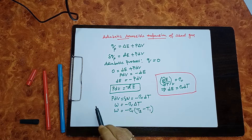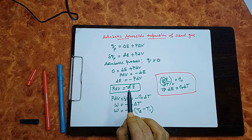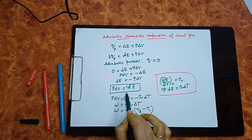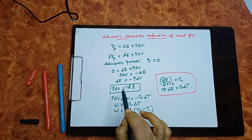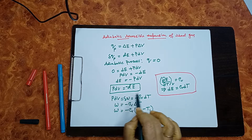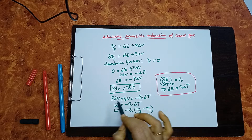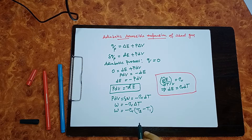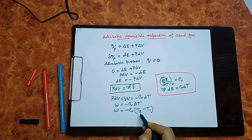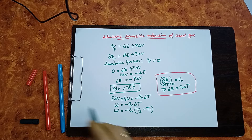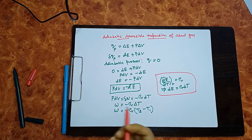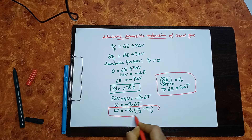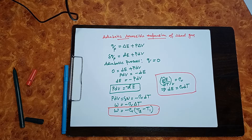So the total work W equals −C_V·dT integrated, which gives W = −C_V(T2 − T1). Because in an adiabatic process heat is not absorbed during expansion, the system uses its own internal energy, so there is a temperature change. This is the work done in adiabatic reversible expansion of an ideal gas.